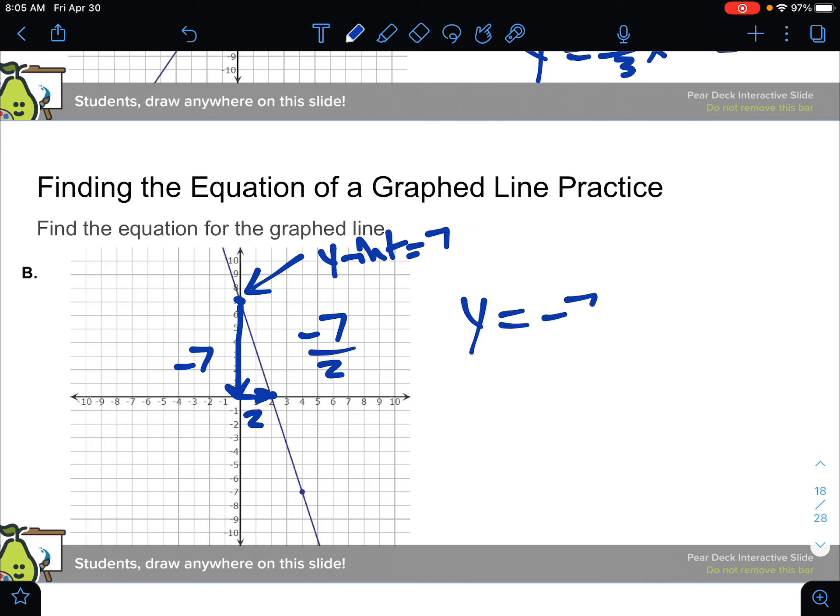So our slope, or our equation I mean, is y equals negative seven over two, because that's the slope, x plus seven. Again, that's always mx plus b, where m is the slope and b is the y-intercept.